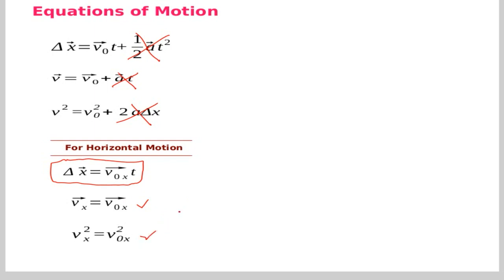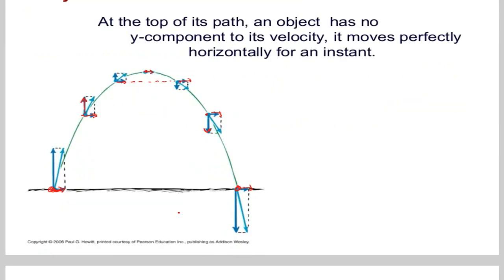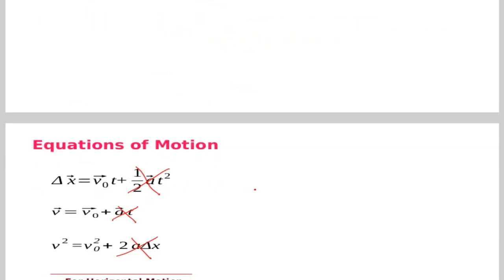When we were discussing the size of horizontal component, we said that it doesn't change. So that means the horizontal component of the velocity at any time during the motion is the same. So that's basically what is written here.